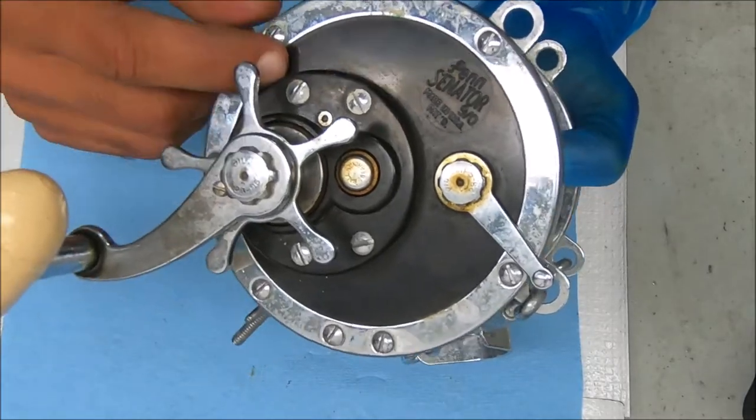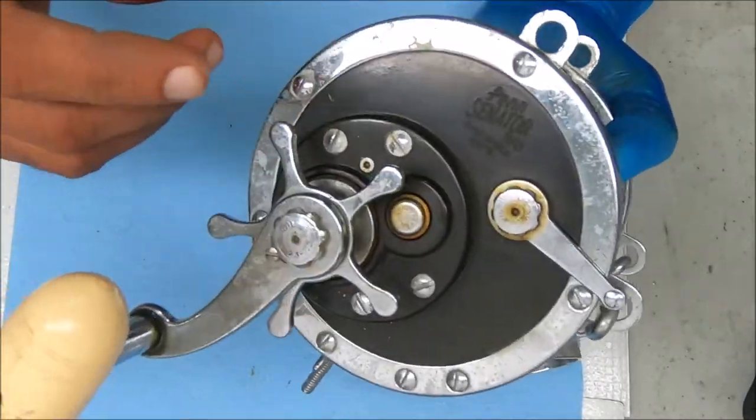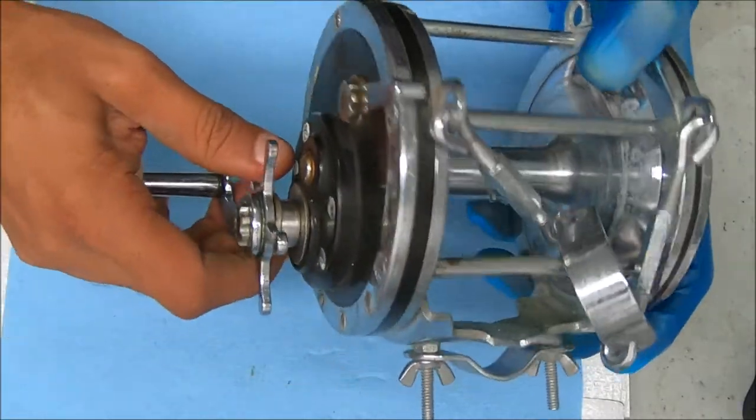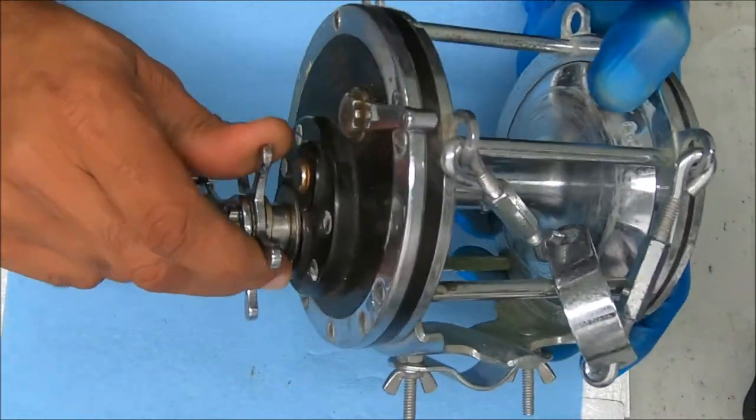Hey y'all. Alright, today we have a Penn Senator 9-0 that's not doing anything with the drag. The star knob is stuck or frozen and I can't move it.